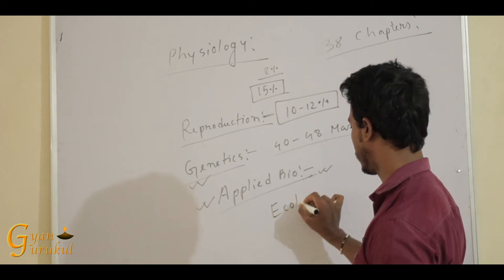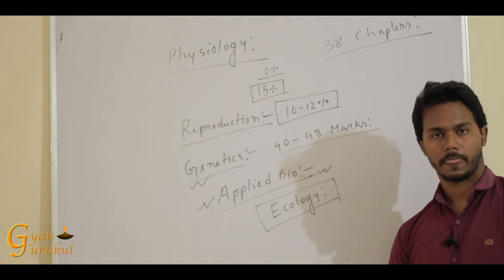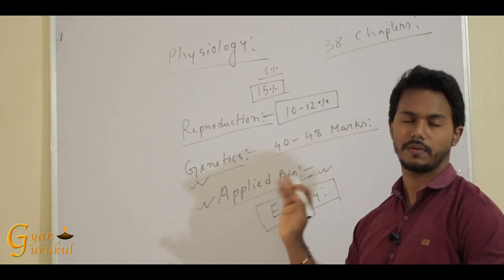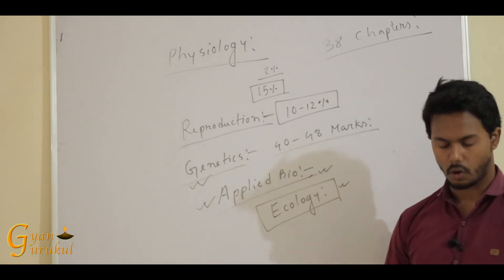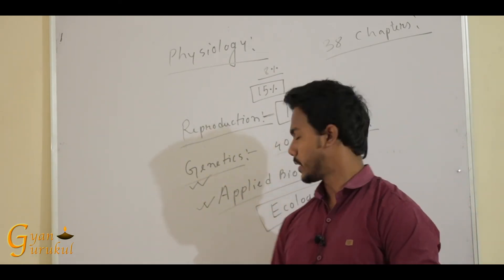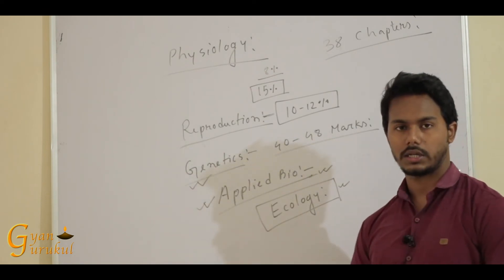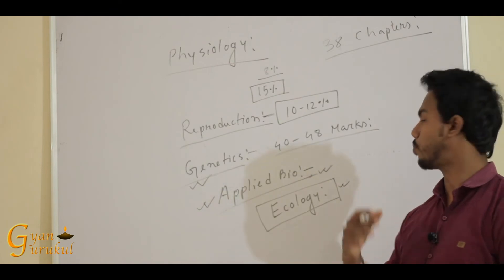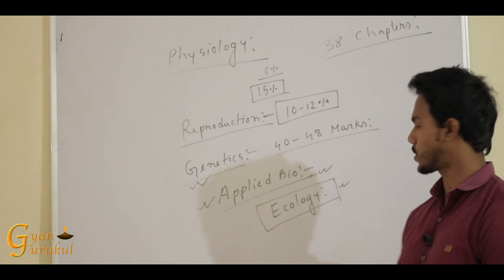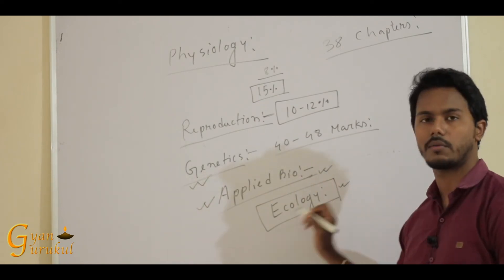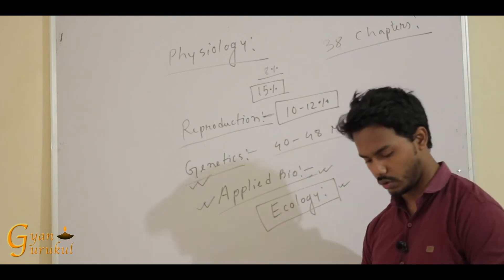The last major portion is ecology, which is the heaviest portion. A minimum of 50 to 60 marks come from ecology every year. Ecology chapters assess the ecosystem, normal ecology, diversity-related chapters such as conservation biology, and pollution-related chapters. Every year you can expect 50 to 60 marks from this portion — it is full of very easy chapters.